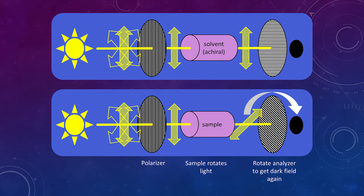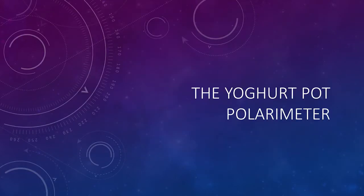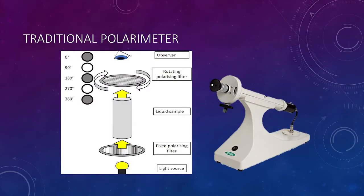Those of you who are more practically minded can probably start thinking about things to explore here. I'm going to move into the part where we show you how to construct one of these polarimeters very simply — the yogurt pot polarimeter. The traditional polarimeter has a light source, a fixed polarizing filter, a sample, and a rotating filter; you look for extinction and measure the angle.